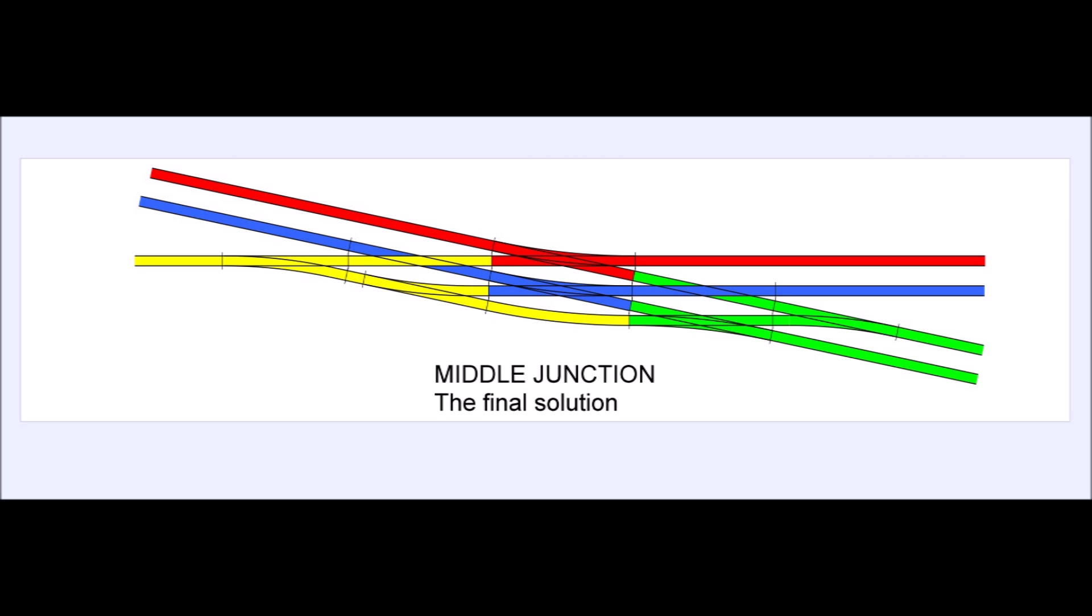But what it led to was this, the idea of adding a loop line from the yellow to the green around the bottom of the junction.